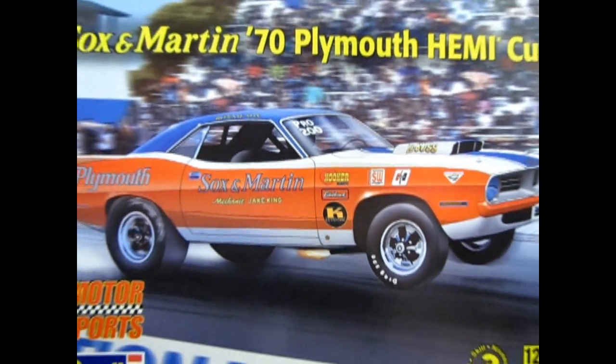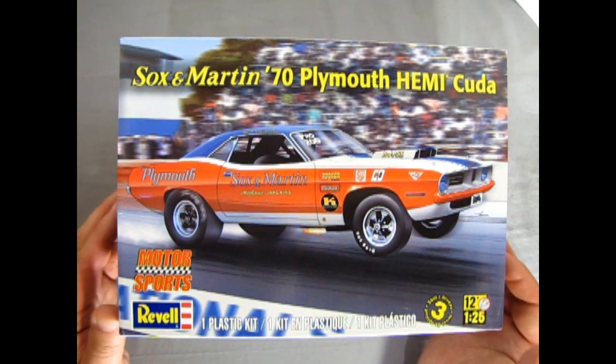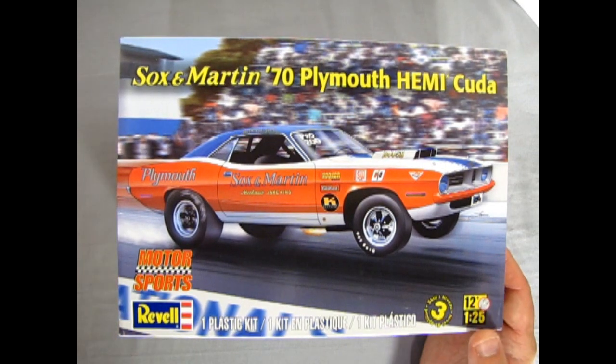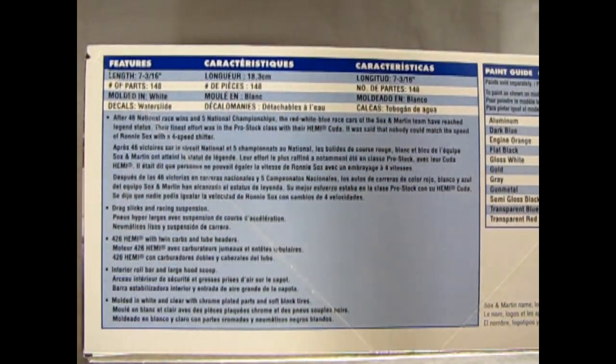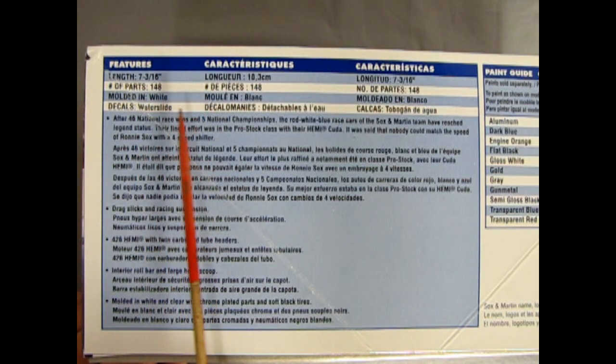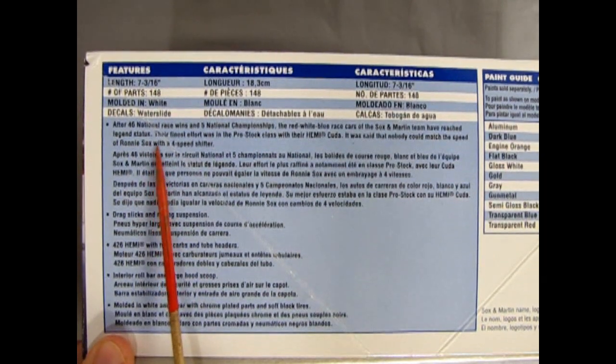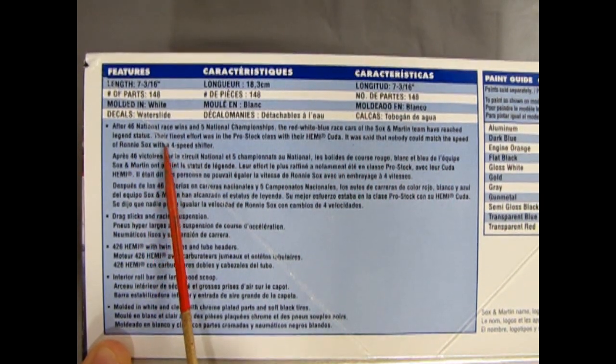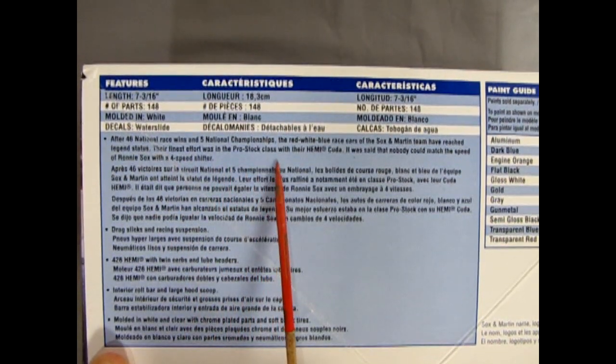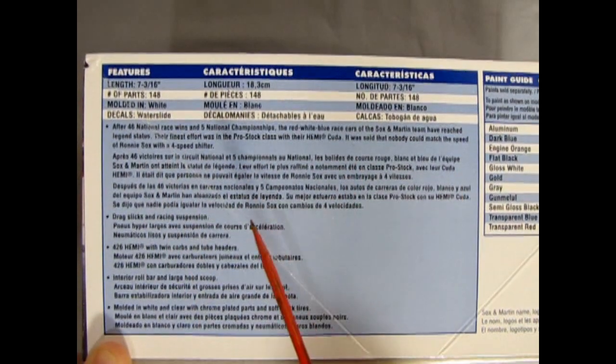Here we are once again down at the drag strip where we get to see the Sock'n Martin 70 Plymouth Hemi-Cuda taking the lead. This is a skill level 3 kit for ages 12 and up in 1:25th scale from the Motorsports Association in conjunction with Revell. This is another kit loaned to me by my good friend James. On the side of the box it says it is 7 and 3/16 inches long, there's 148 parts molded in white with chrome and water slide decals. After 46 national race wins and five national championships, the red white and blue race cars of the Sock'n Martin team have reached legend status.